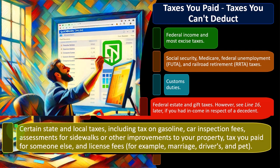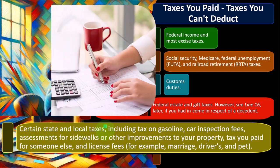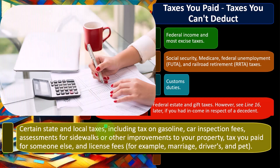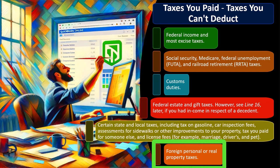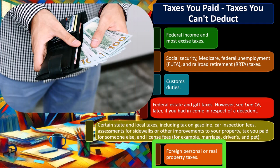Let's take a look at these state and local taxes. Tax on gasoline — when you buy gas, there's typically a tax on it. The idea is that people who use more gas are going to be using the roads, which are community property, and therefore should pay more for the roads. Car inspection fees, assessments for sidewalks and other improvements to your property, and taxes you paid for someone else — you can't deduct someone else's tax. License fees, for example marriage, drivers, and pets, are also not deductible. Foreign personal or real property taxes are not covered here — we're talking state and local taxes, not foreign taxes. Foreign income is a whole other world.